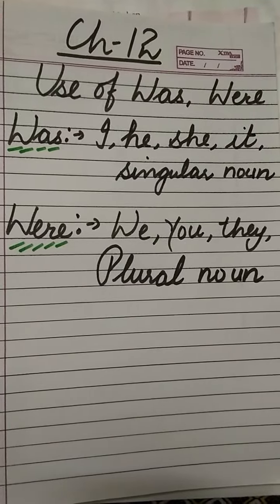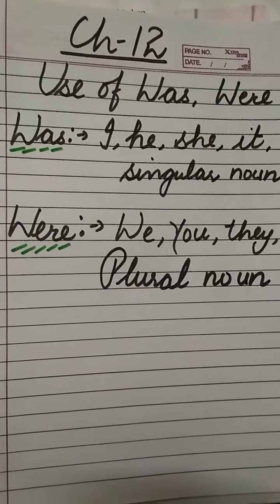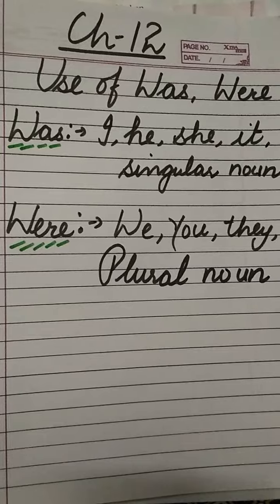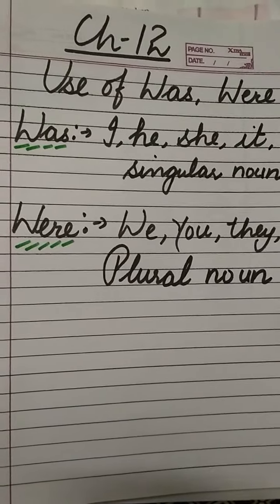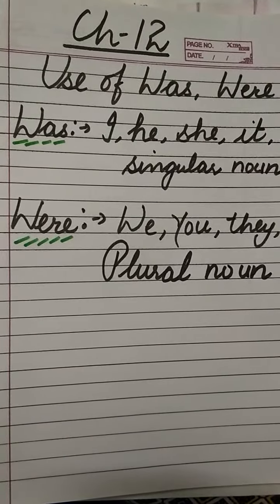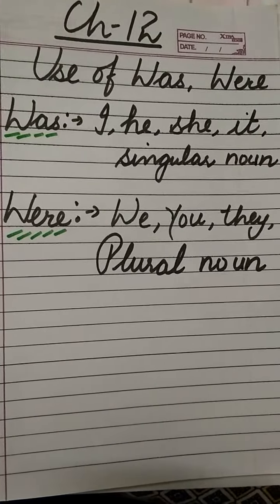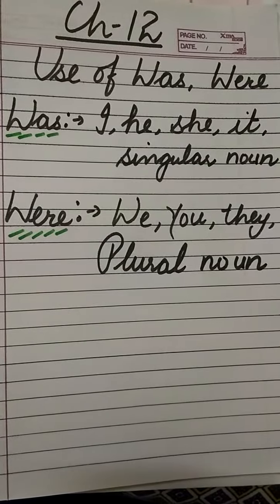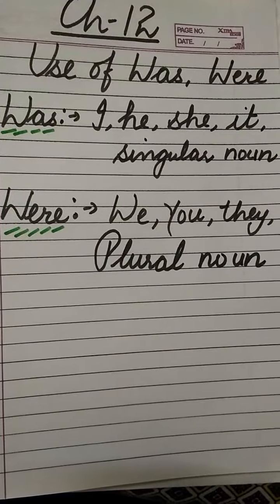Good morning students. Today we are going to start chapter number 12 from the English grammar book — use of was and were. Let's start with the rules.